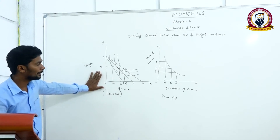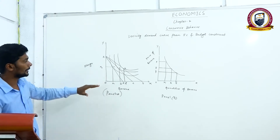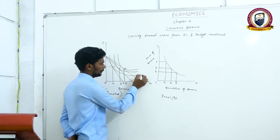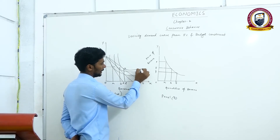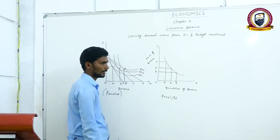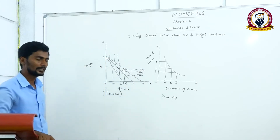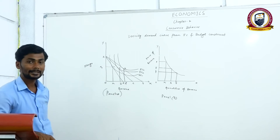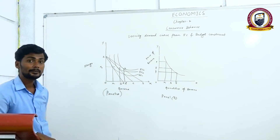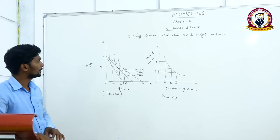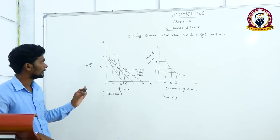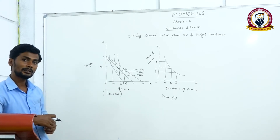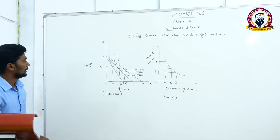So how to derive the demand curve using indifference curves: IC1, IC2, and IC3 — these are the three indifference curves. And AB, AC — these are the three budget lines. By using indifference curves and budget lines, we are going to derive the demand curve.